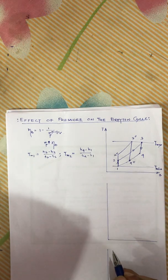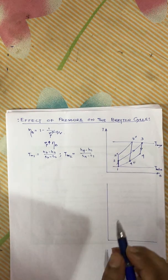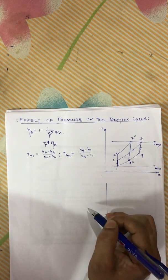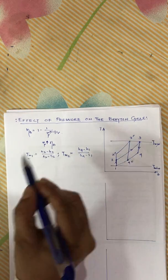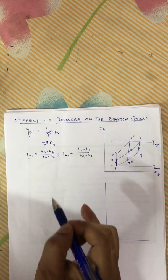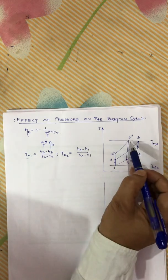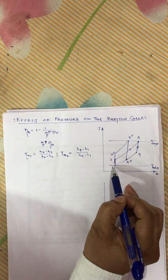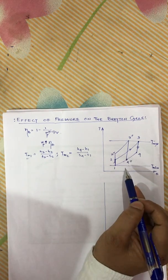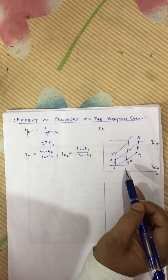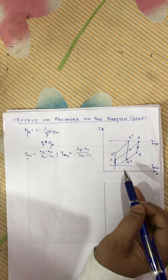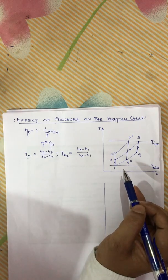As the pressure ratio increases, efficiency will increase because the mean temperature of heat addition will increase and the mean temperature of heat rejection will decrease. The mean temperature of heat addition Tm1 approaches T_max, and the mean temperature of heat rejection Tm2 will approach T_min.